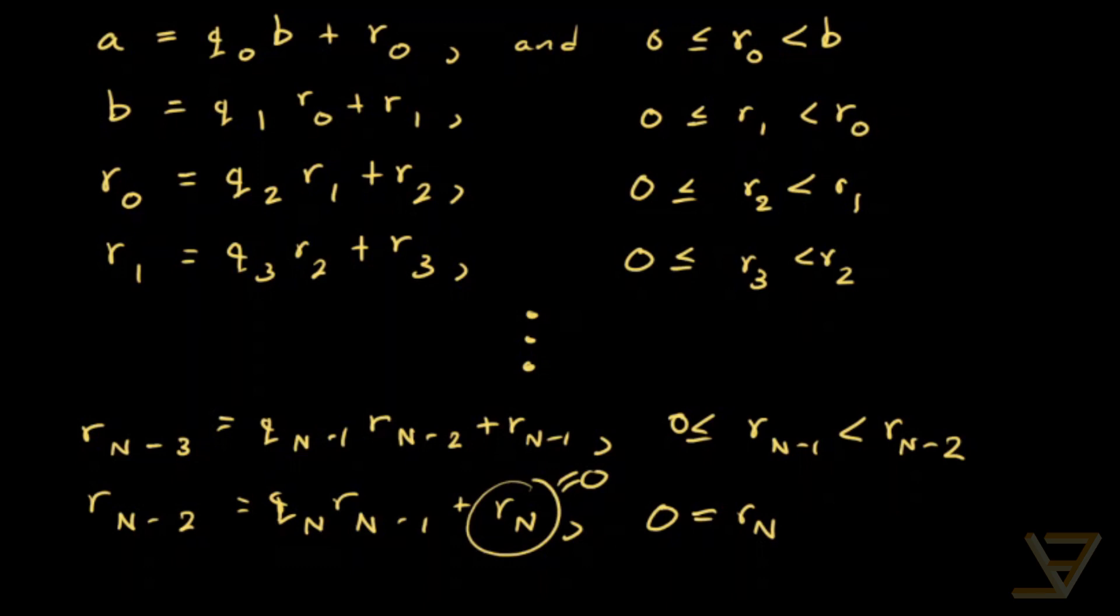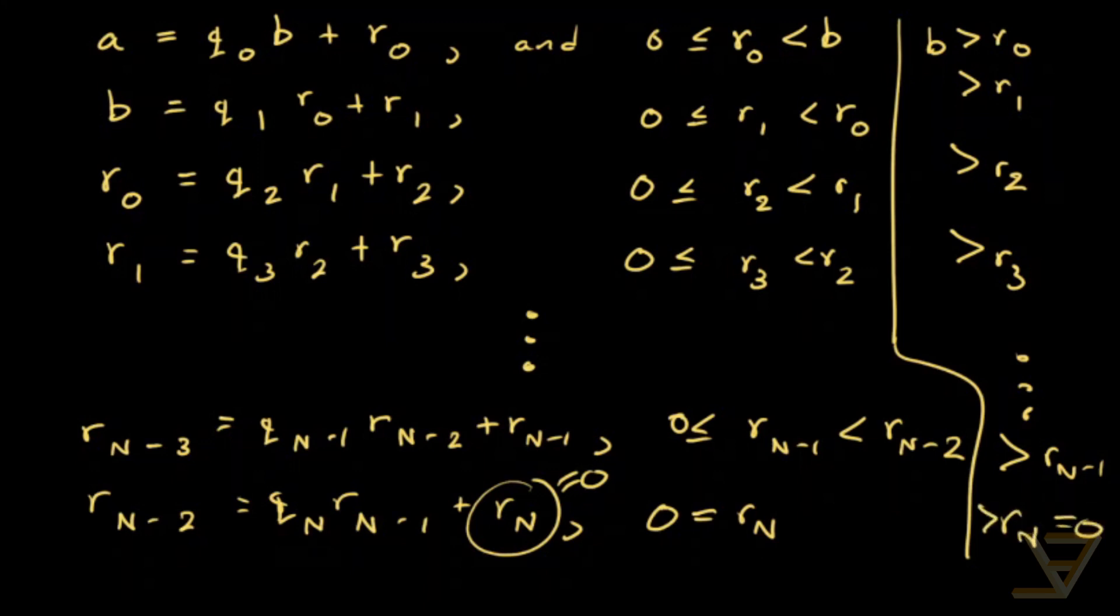So there's a question of whether this will actually happen and the truth is yes, it will happen because notice that b is greater than r0 and r0 is greater than r1 and r1 is greater than r2 and r2 is greater than r3. And we just keep going like that until we have it's greater than r(n-1). And finally we get rn which is equal to 0. And this has to happen because we have a strictly decreasing sequence of remainders and the remainders are all greater than or equal to 0. So sooner or later you have to hit rock bottom which is 0.